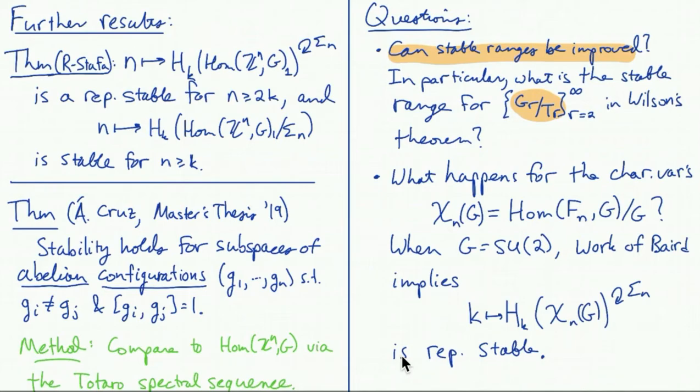So another interesting question is what happens if you look at representations of some other group, even just a free group. If you look at G to the N mod conjugation by G, that actually becomes something interesting. That's the free group character variety of G. And the cohomology of those spaces is known when G equals SU_2, and that's work of Baird, and from his formulas, you can actually see that when you look at the symmetric group action here for permuting the coordinates of an n-tuple, you get a representation stable sequence. So it's natural to conjecture that that might extend to other Lie groups, not just SU_2. And that's something that I've talked some with Sean Lawton about, and we have some ideas, but it's nothing very concrete yet.